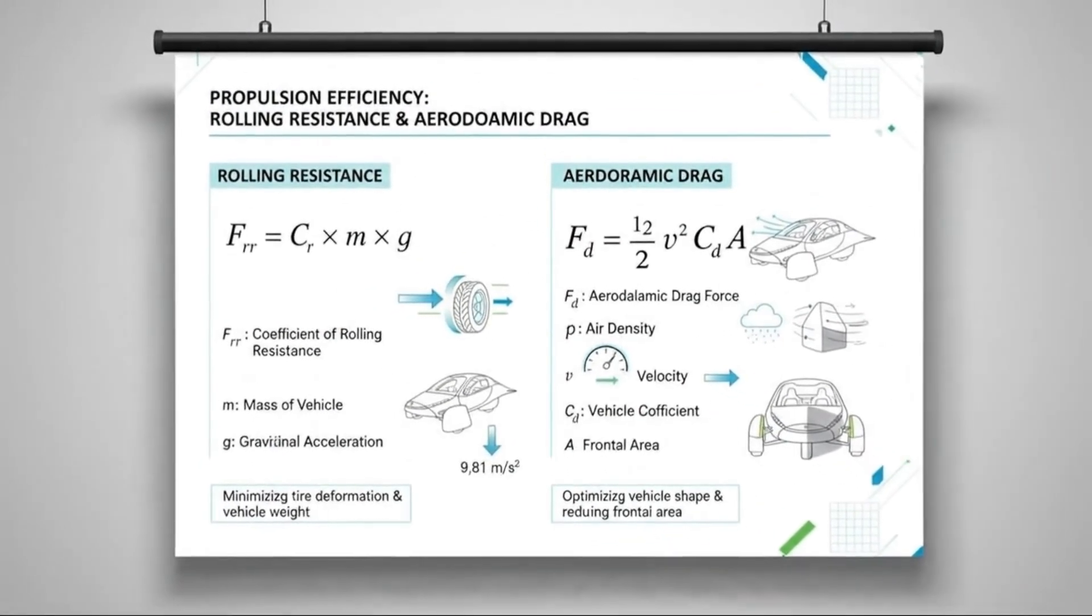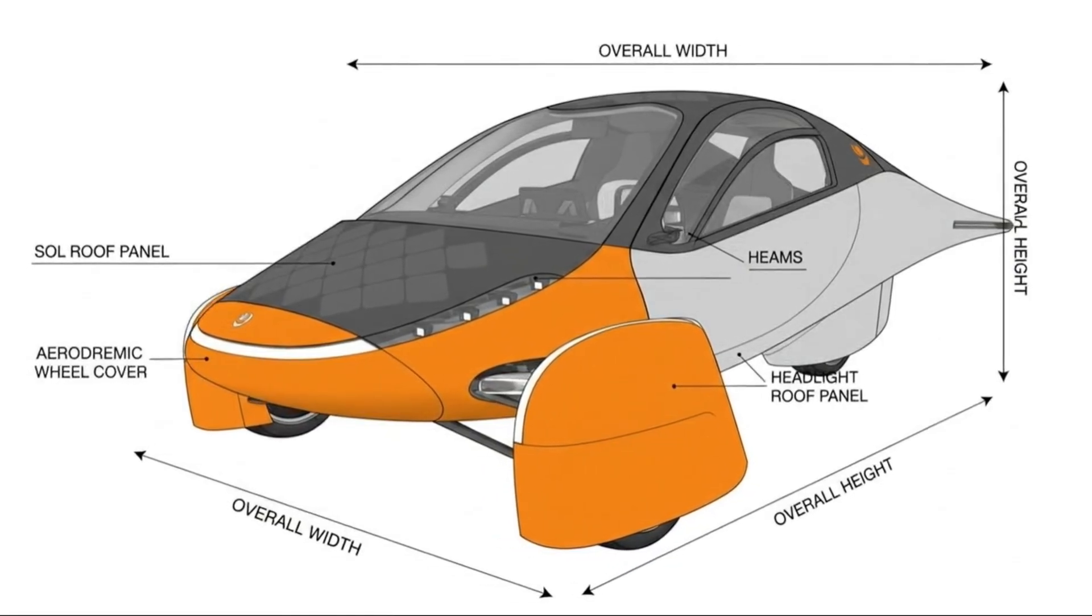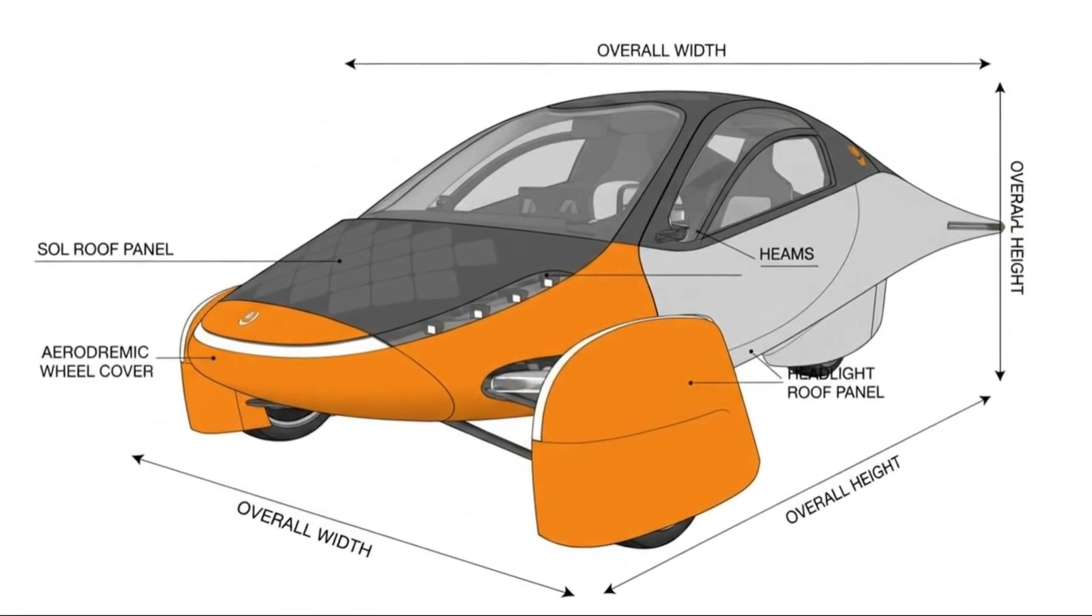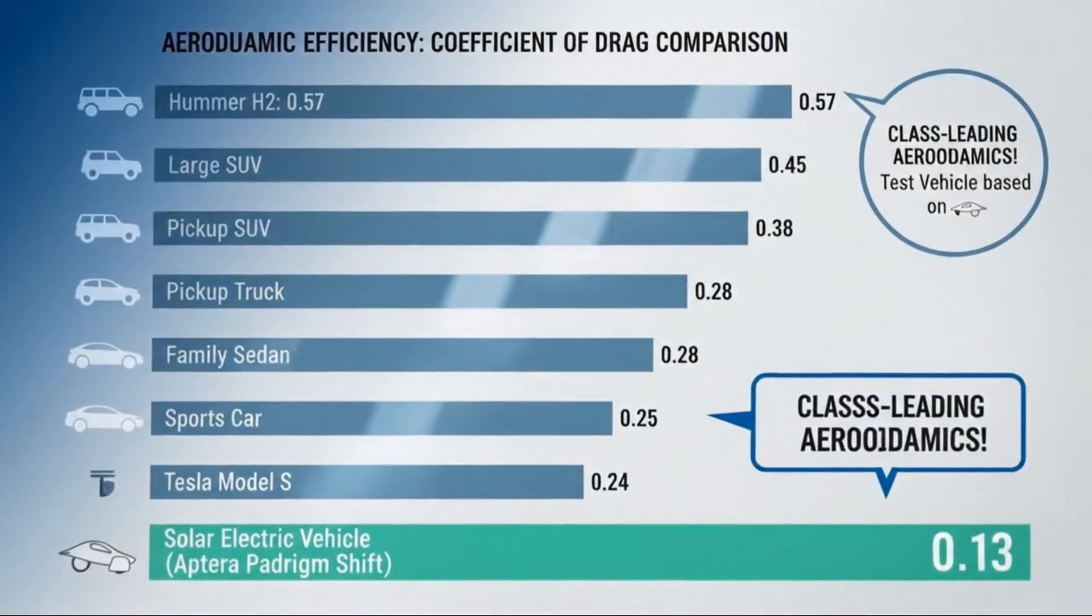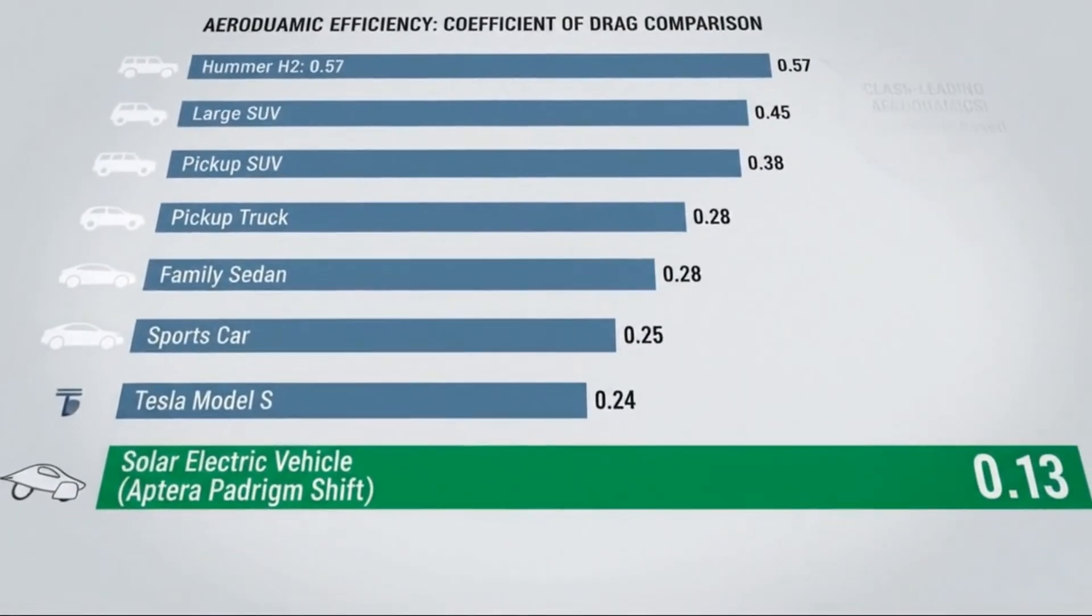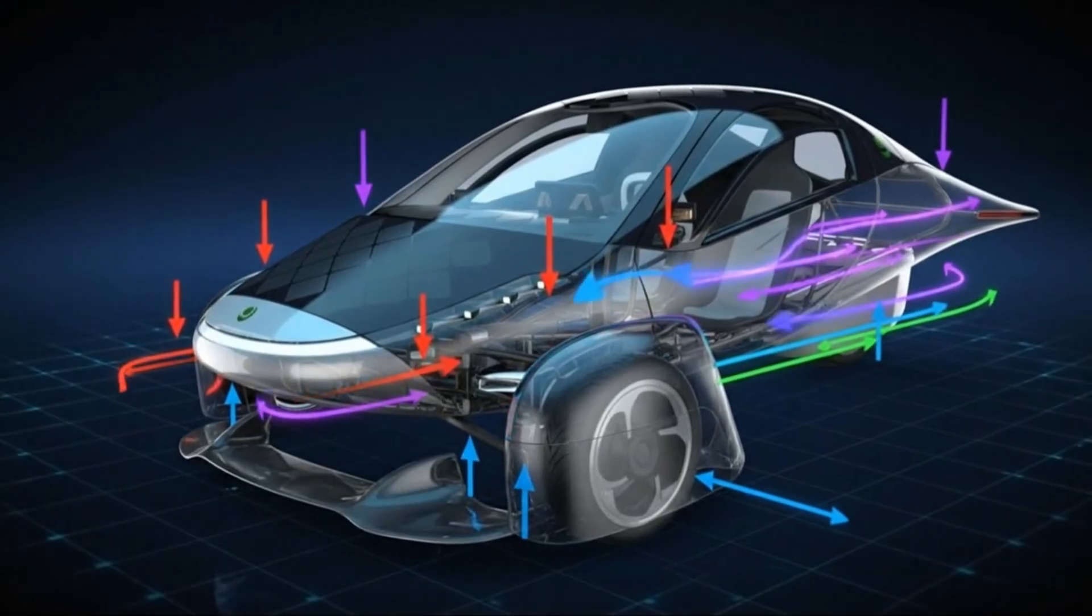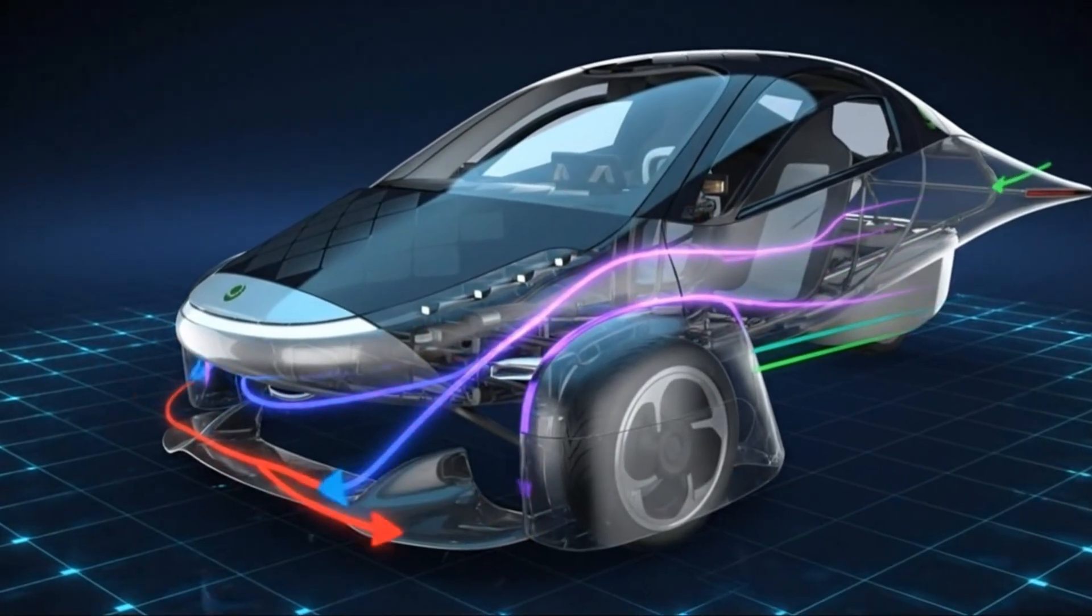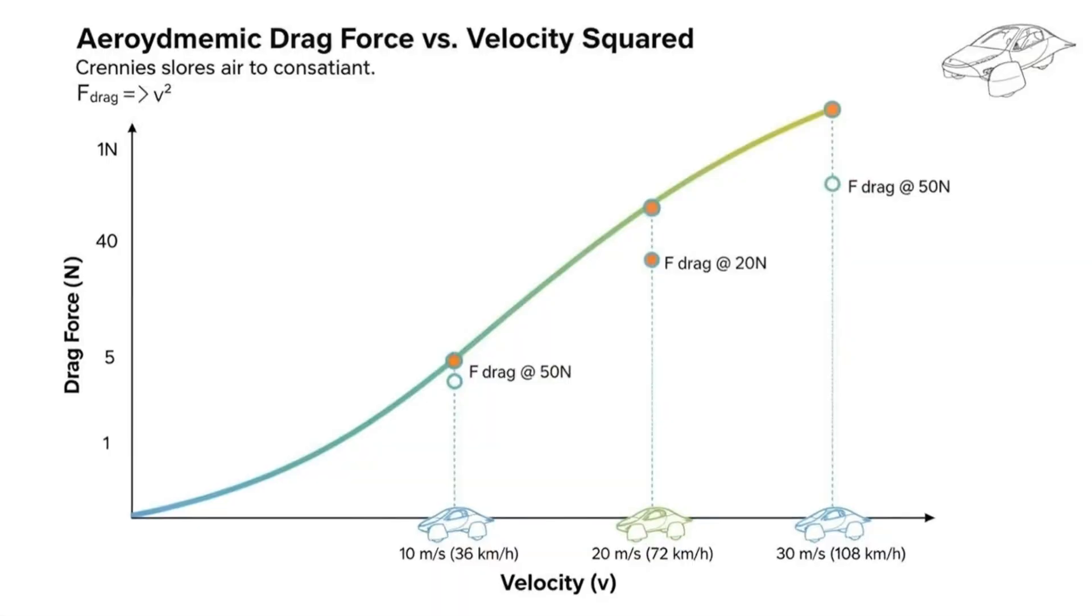At highway speeds, air resistance becomes the dominant force working against a vehicle. Every improvement in aerodynamic shape directly reduces the energy needed to maintain speed. Aptera's teardrop-inspired form isn't designed for style, it's designed for pressure recovery. Air flows smoothly around the vehicle, expands after the widest point, and gently recompresses behind it.